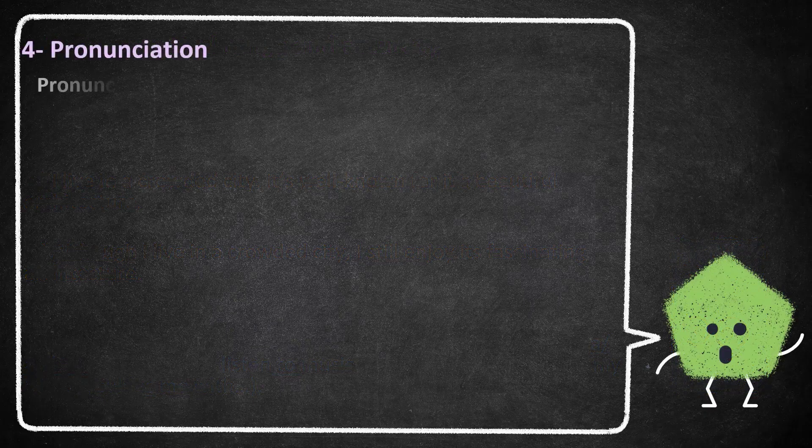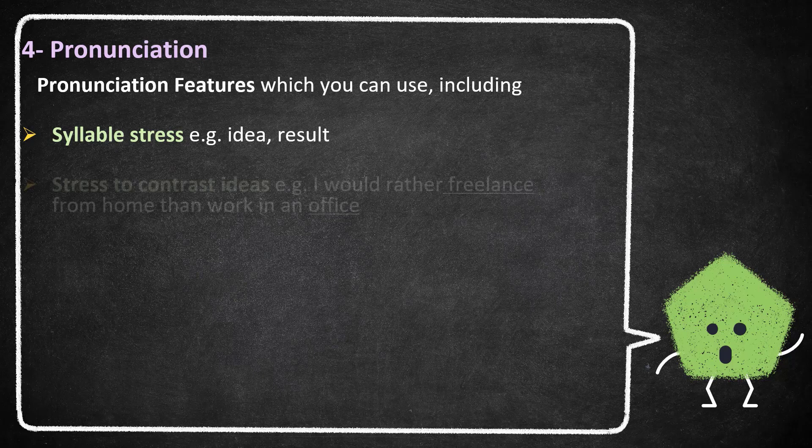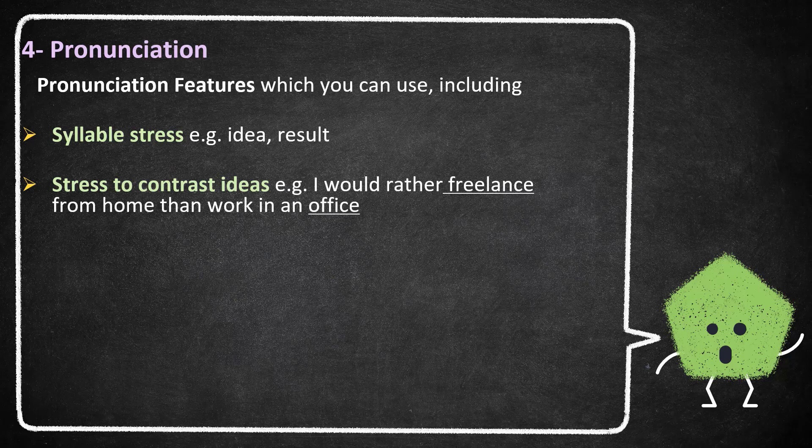The fourth and last descriptor is pronunciation. And here we have some features that you have to be aware of. Syllable stress, which means you pronounce one word properly. Idea, not idea, result, not result. Stress to contrast ideas. If you have to contrast ideas while speaking, you have to show the stress. I would rather freelance from home than work in an office.